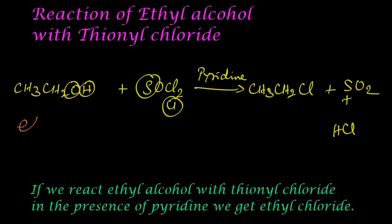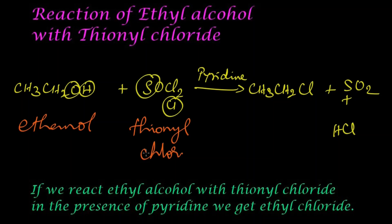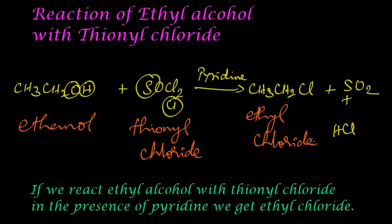The reactant is ethanol or ethyl alcohol, and this is thionyl chloride. The products we get are ethyl chloride (chloroethane), sulfur dioxide (SO₂), and hydrogen chloride (HCl).